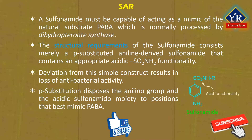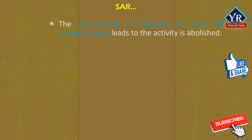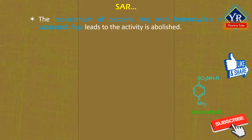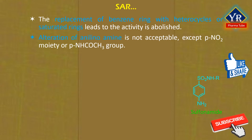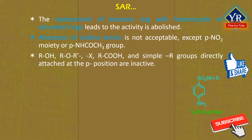With respect to antibacterial effects, para-substitution about the benzene ring disposes the anilino group and the acidic sulfonamide moiety to positions that best mimic PABA. This feature is vital. Isomeric analogues are useless as antibacterial agents. The replacement of the benzene ring with heterocycles or saturated hydrocarbon rings is not tolerated, which means antibacterial activity is abolished. Alteration of the anilinoamide functionality is generally not acceptable except for replacement with para-nitro moiety or para-acetamido group. In this context, alcohol, ether, halogen, carboxylic acid and simple alkyl groups directly attached on the para position of the benzene sulfonamide are inactive.